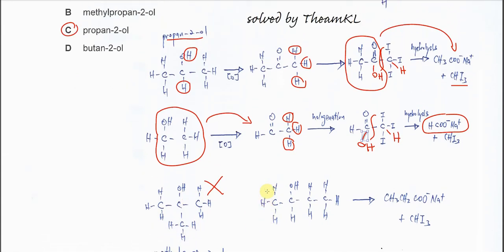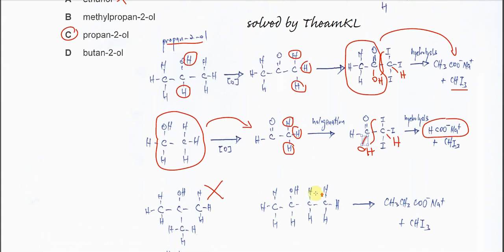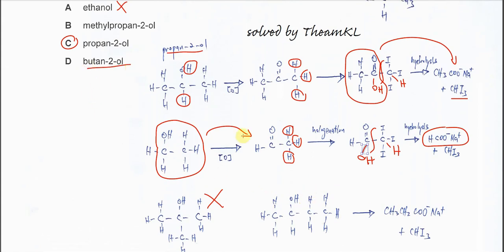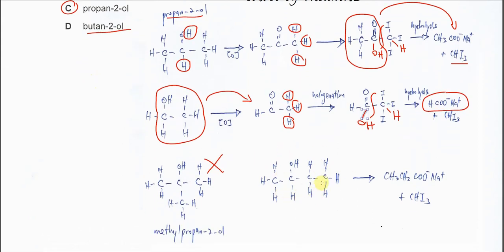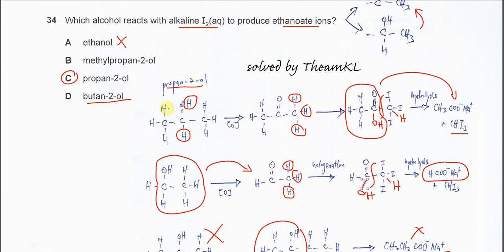If we use butan-2-ol reacting with alkaline iodine — we know it has this alcohol group so it will react — but it will form the wrong ions, and this is not the answer. Therefore the answer confirmed is propan-2-ol, because it undergoes this reaction to give the ethanoid ion.